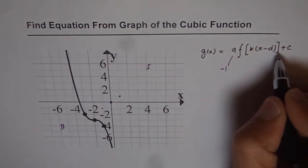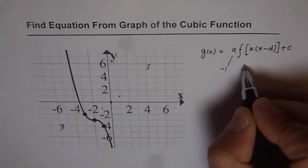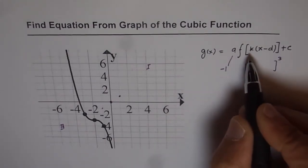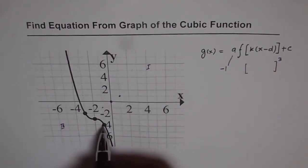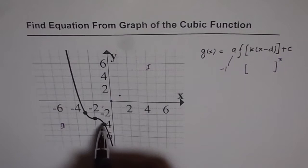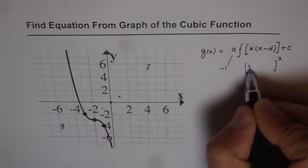Now the function as such is a cubic function. So we will write cube here. So the function is a cubic function. The k value is a horizontal stretch or compression. Since the next number is one unit away only, therefore k is also one.